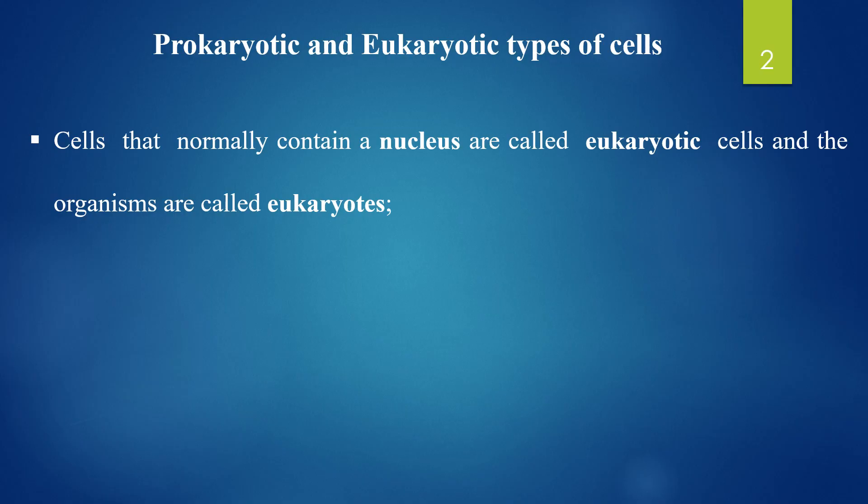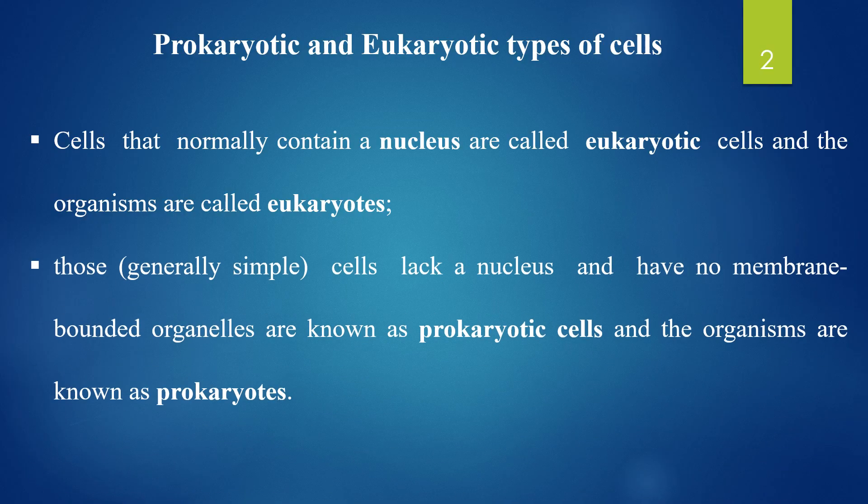Cells normally contain a nucleus — those are Eukaryotic cells. These organisms are called Eukaryotic cells. These are generally simple cells like those with a nucleus, but some have no membrane-bound organelles. These are known as Prokaryotic cells, and these organisms are known as Prokaryotes.